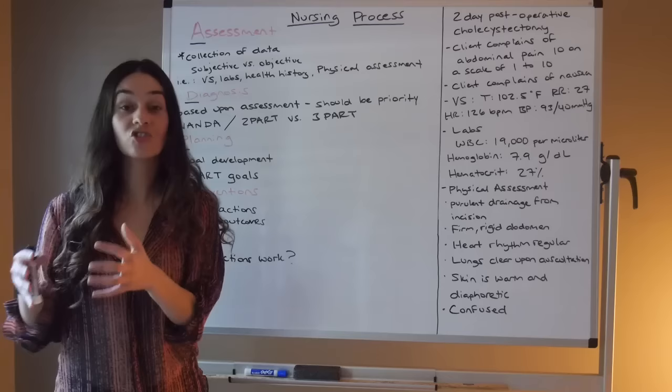A two-part diagnosis is used for potential problems — not right-here, right-now, but something we know can potentially occur. For a confused client, there is automatically a risk of falls. Since it's a risk, it's two parts only: 'risk of falls related to confusion.' We cannot add 'as evidenced by' because that would mean the problem has already occurred — if the client fell, it would now be a right-here, right-now problem.